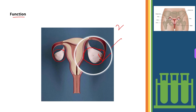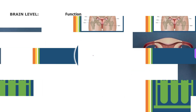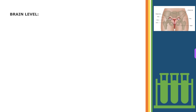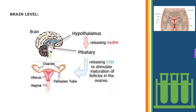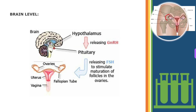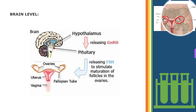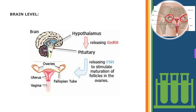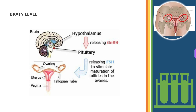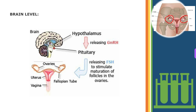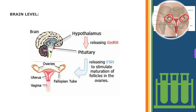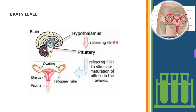Next we will discuss the GNM concept about ovary diseases. According to the principles of German New Medicine, the ovaries are a part of the female reproductive system and they play a very crucial role in the body's response to certain emotional shocks or conflicts. In GNM, the ovaries are associated with the conflict theme of worthlessness or not being good enough. When a woman experiences a significant emotional shock related to this theme, it can trigger a biological response in the body that affects the ovaries.